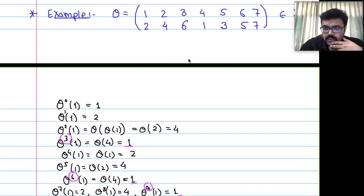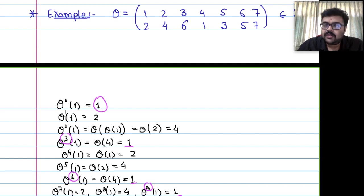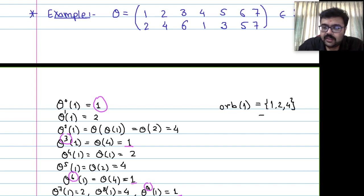The elements 1, 2, 4 are cycling repeatedly, so we consider this as the orbit of 1, written ORB(1). Orbit of 1 = {1, 2, 4}. Since it is a set, we can also write it as {2, 1, 4} or any order — order doesn't matter for the set.